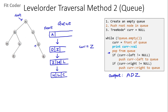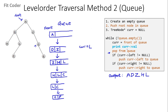In the next iteration, current becomes H — we print H, pop from the queue. Left and right of H are both null so those if conditions are false. Then current becomes L — we print L, pop from the queue. Left of L is P so we push P; right of L is null so that if condition is false. Then current becomes C — we print C, pop from the queue. Left of C is null; right of C is E so we push E.